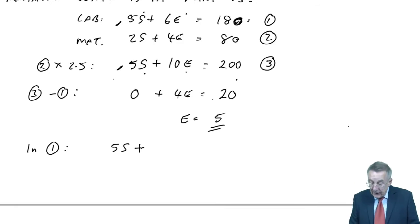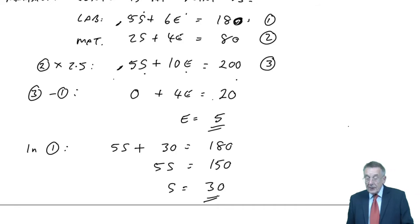10E minus 6E is 4E. 200 minus 180 is 20. And of course now everything's wonderful. If 4E equals 20, E equals 5. And now I know what the answer is for E, you can go back to either of the first two equations and work out S. If I go back to the first equation, 5S plus, well 6E, 6 times 5 is 30, is equal to 180. 5S, subtracting 30 from both sides, is 150. S therefore is 30.